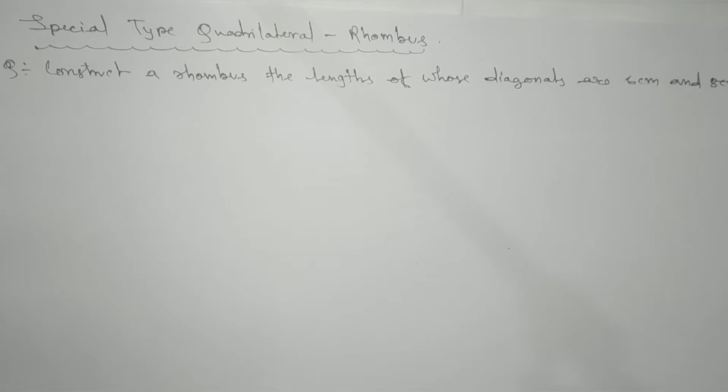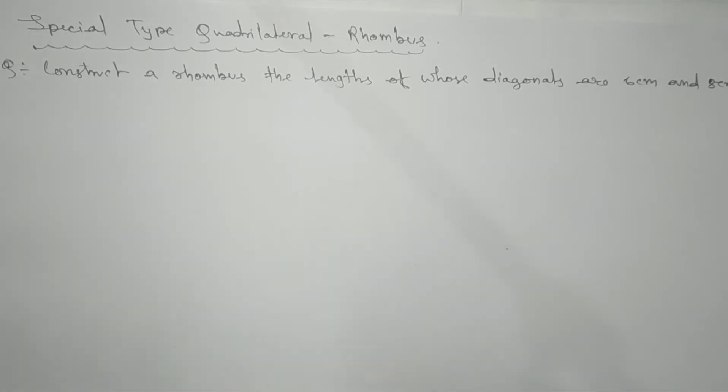Here we have a special type quadrilateral, a rhombus. To construct a rhombus, the length of whose diagonals are given here: 6 centimeter and 8 centimeter. We'll use the rhombus property that diagonals bisect each other at 90 degrees.